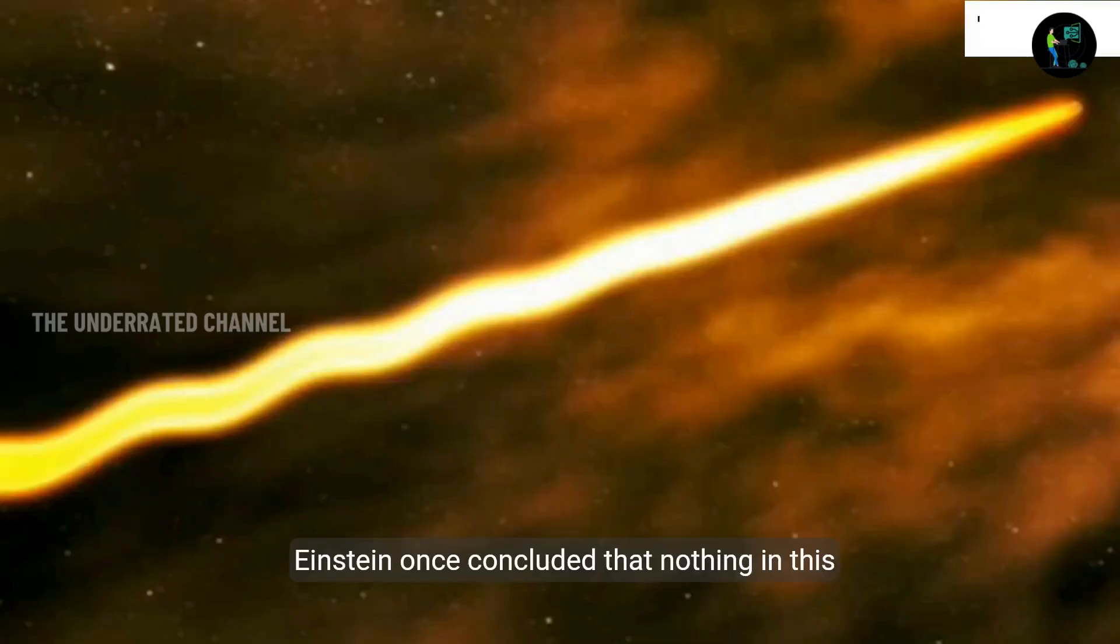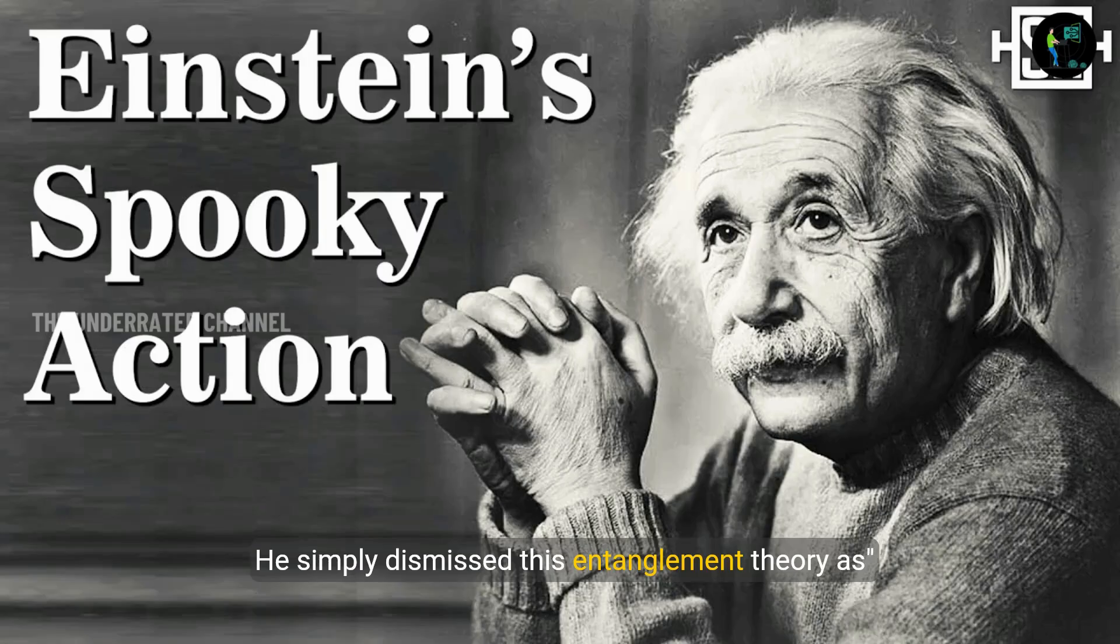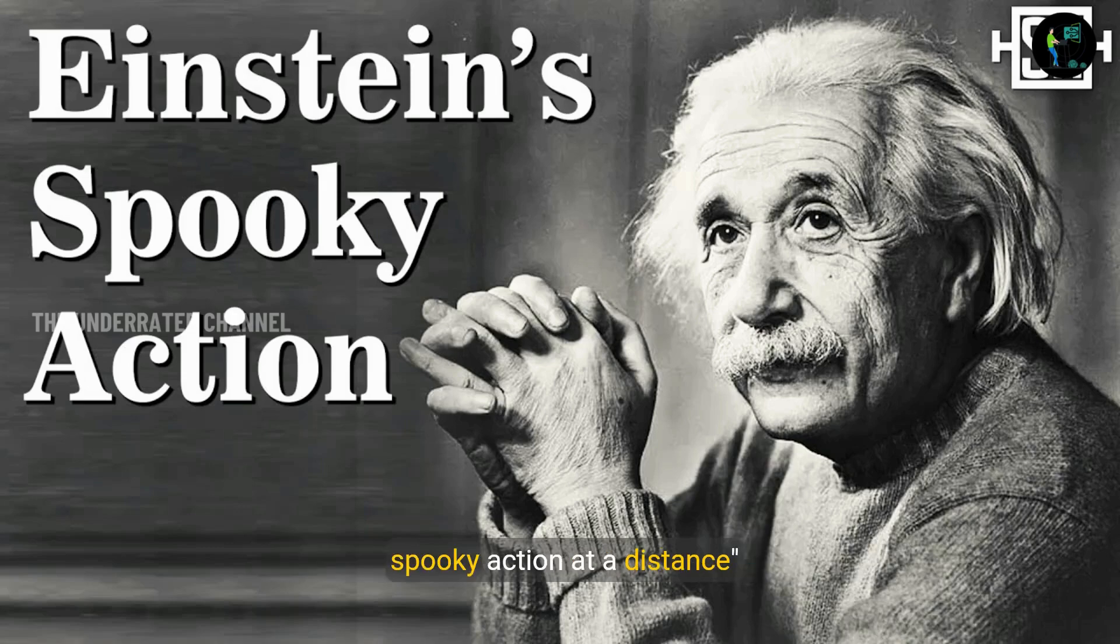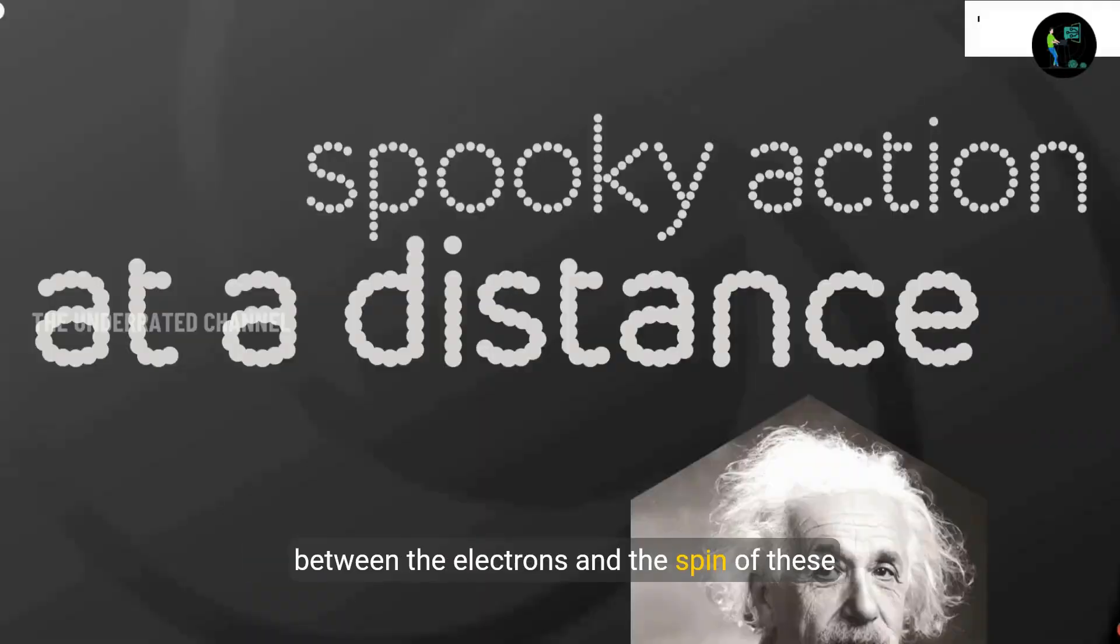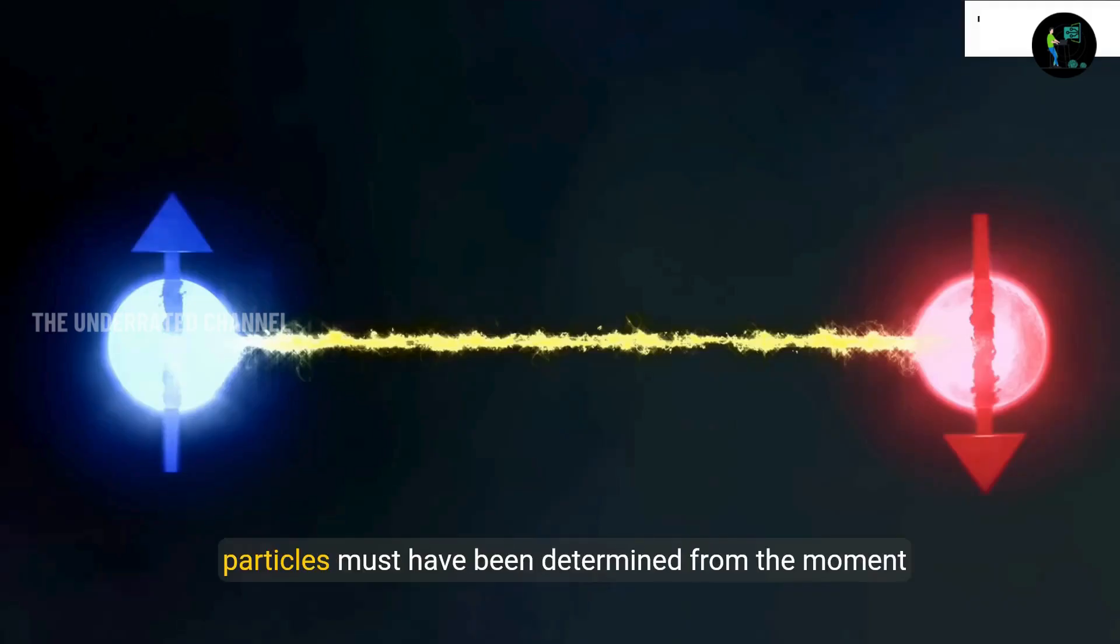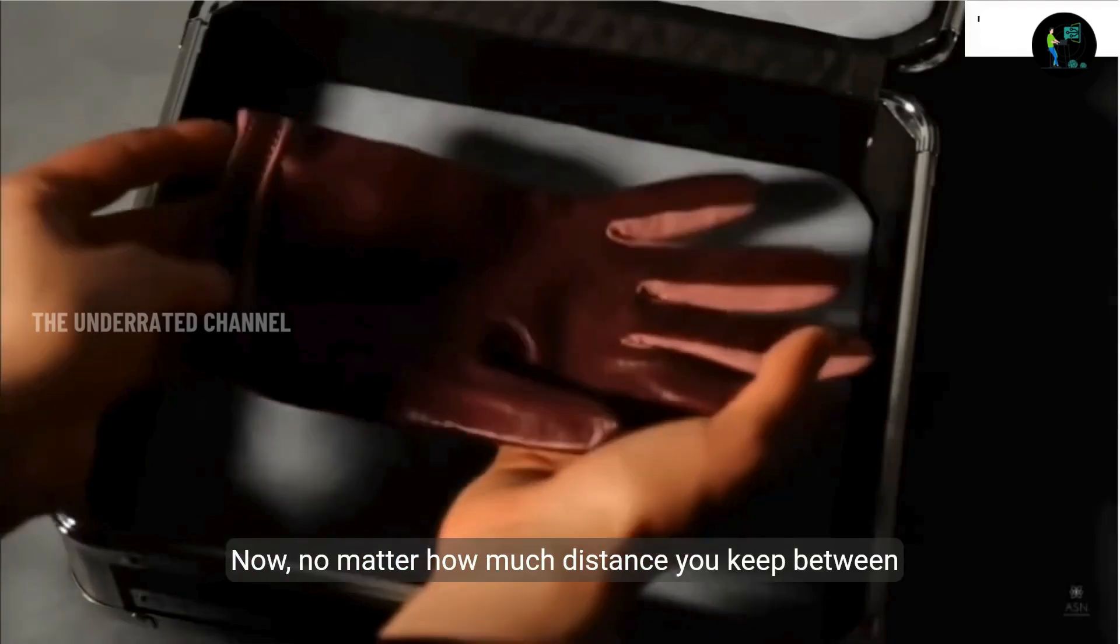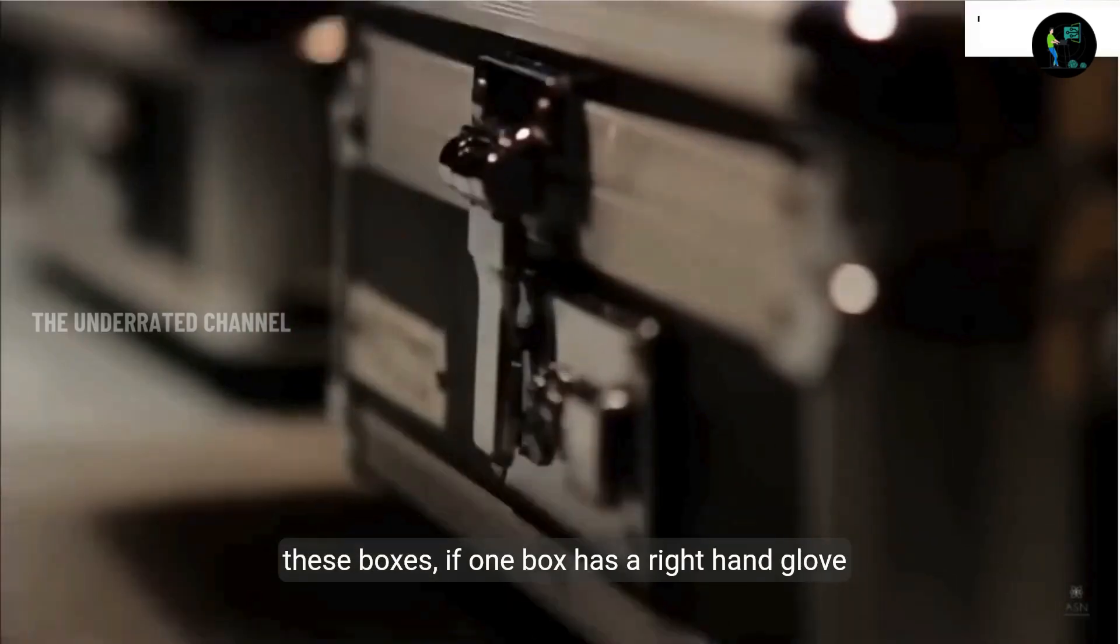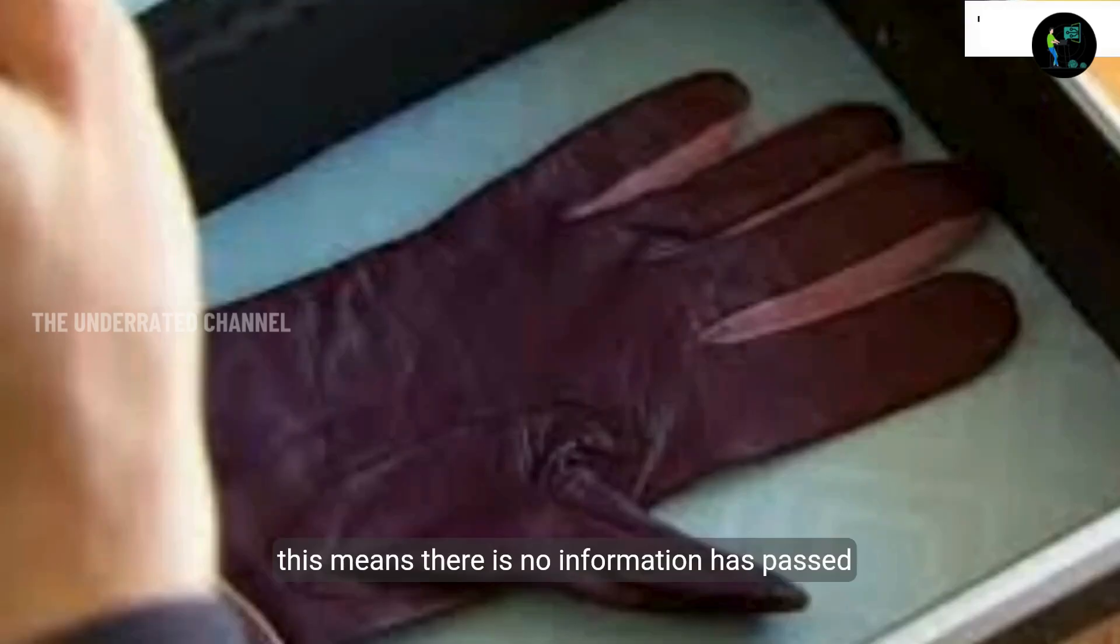Now, Einstein entered into the game. Einstein once concluded that nothing in this universe can travel faster than light. So, Einstein had a problem with the statement on information travels faster than speed of light. He simply dismissed this entanglement theory as spooky action at a distance and argued that there were no actual communication happening between particles at all. Einstein argued that there is no information passed between the electrons, and the spin of these electrons or particles must have been determined from the moment they were created, and gave an example that, let's say you put a pair of gloves, each in separate box. Now, no matter how much distance you keep between these boxes, if one box has a right hand glove, then the second box will definitely have a left hand glove. This means there is no information has passed between the gloves.